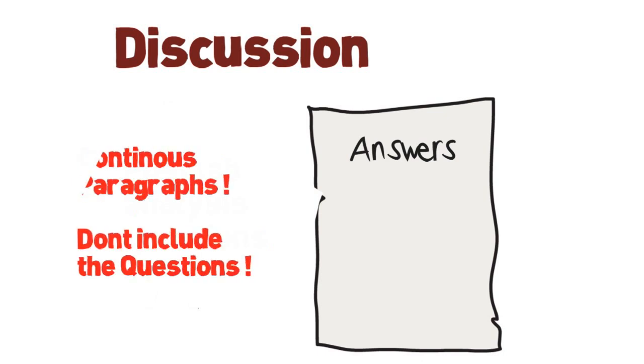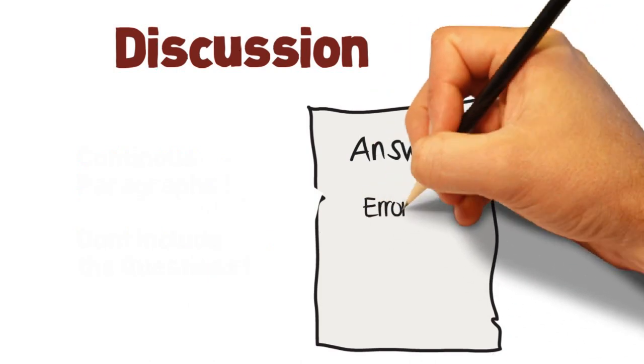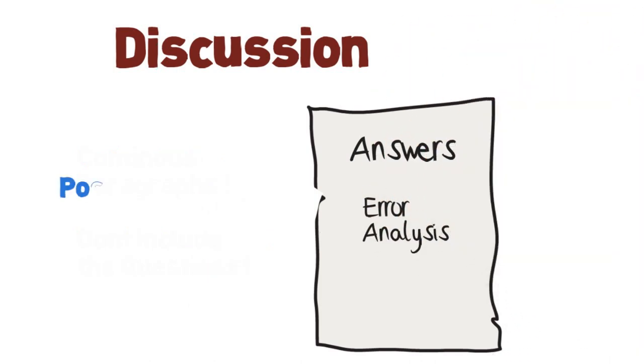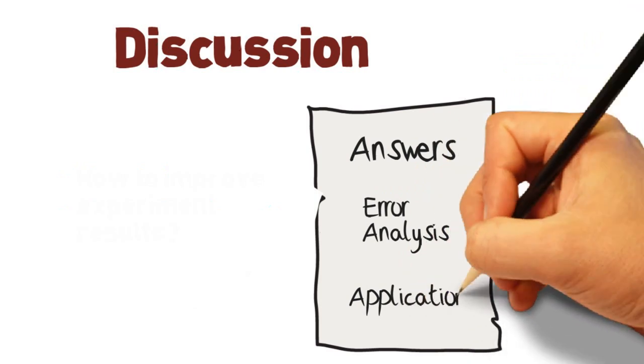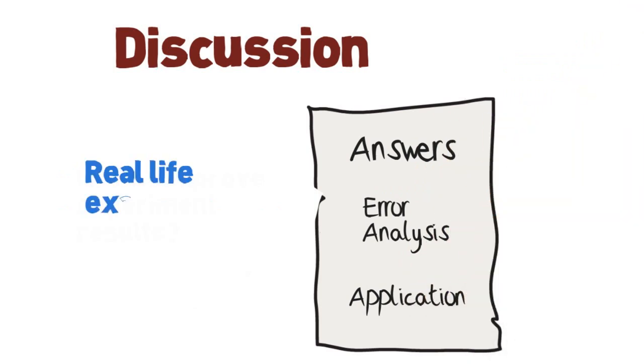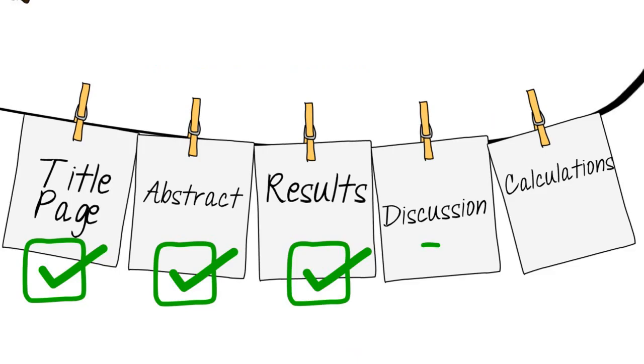It should also contain an error analysis paragraph which explains the possible reasons of error and different data and how to improve the results in the future. Finally, restate the significance of the experiment by giving a real-life example. This could be the same example you gave in the abstract.